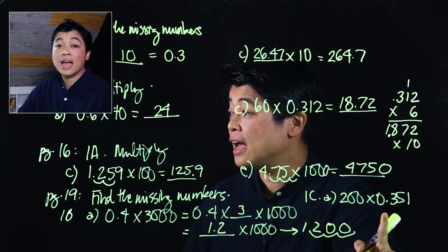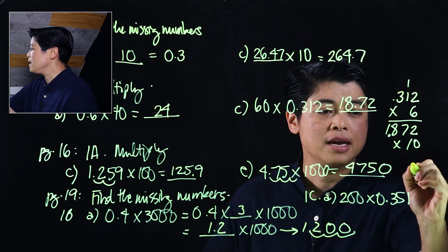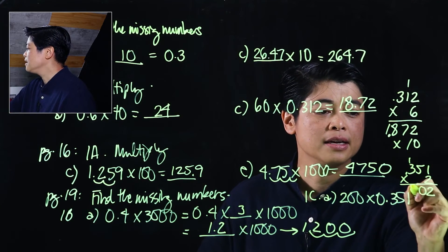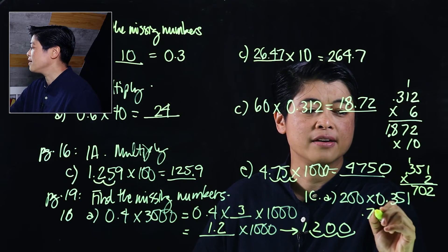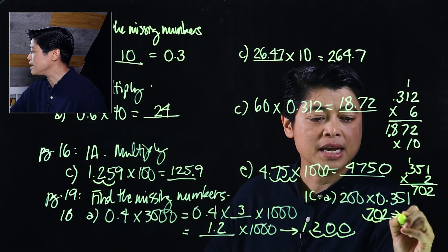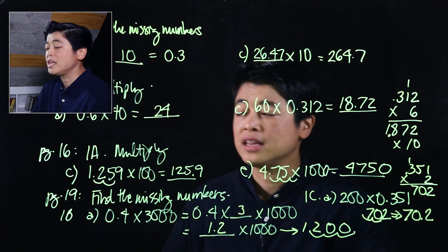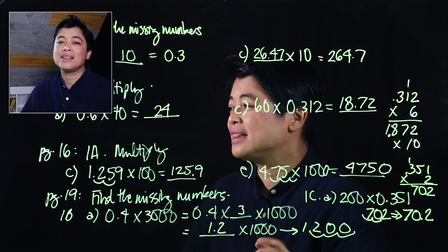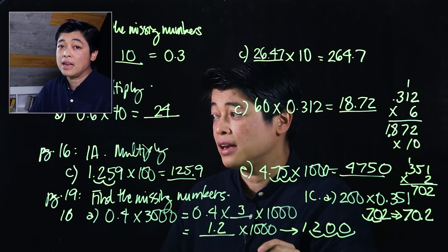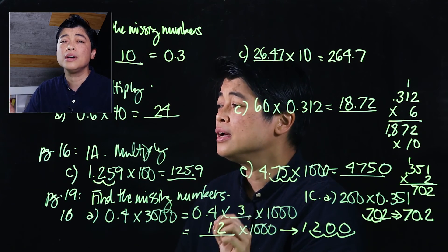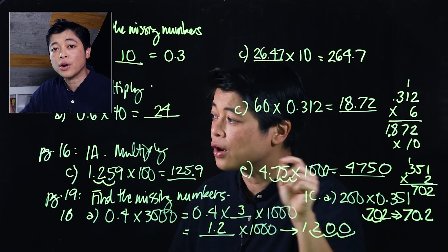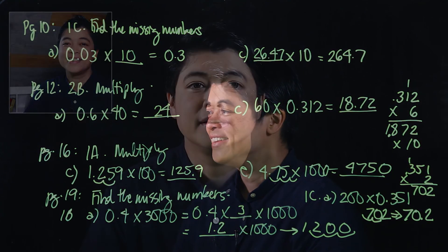For the final example, working on the side: 3.351 times 2 gives 0.702 — wait, that's actually 7.02 — but there are two zeros in the multiplier, so moving the decimal two places to the right gives 70.2. To summarize: when multiplying by 10, 100, or 1000, move the decimal to the right by the number of zeros. For multiples, drop the zeros first, multiply, count the zeros, then move the decimal that many places to the right.